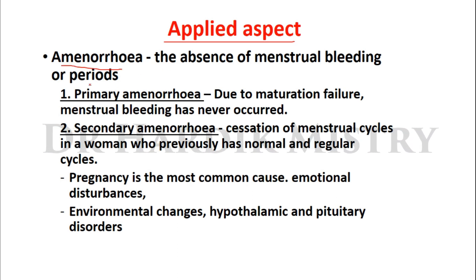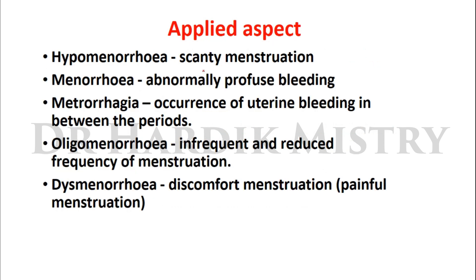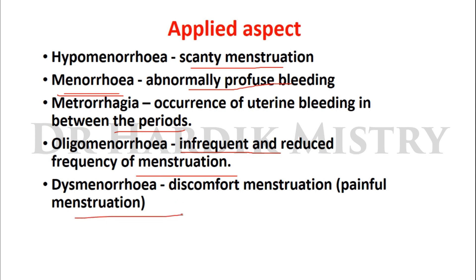Applied aspects: amenorrhea means absence of menstrual bleeding. Primary amenorrhea is due to maturation failure and menstrual bleeding has never occurred. Secondary amenorrhea is cessation of the menstrual cycle in a woman who previously had normal regular cycles; pregnancy is the most common cause of physiological amenorrhea, though emotional disturbances, environmental changes, and hypothalamic or pituitary disorders are other causes. Hypomenorrhea means scanty menstruation; menorrhagia means abnormally profuse bleeding; metrorrhagia means uterine bleeding between periods; oligomenorrhea means infrequent reduced frequency of menstruation; dysmenorrhea means painful menstruation.